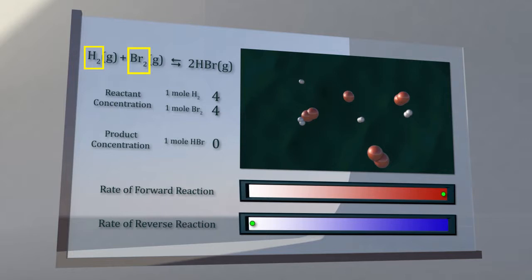The forward reaction of hydrogen gas and bromine gas produces hydrogen bromide gas.